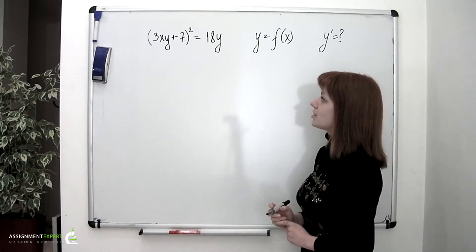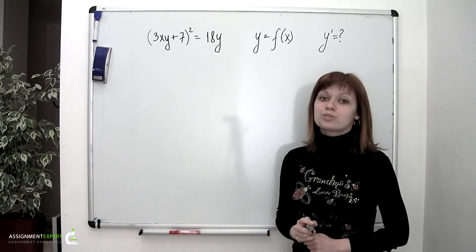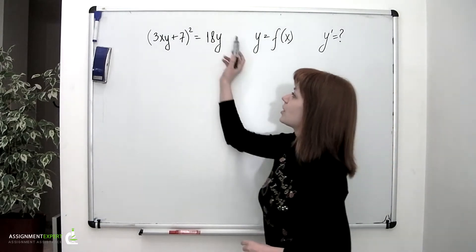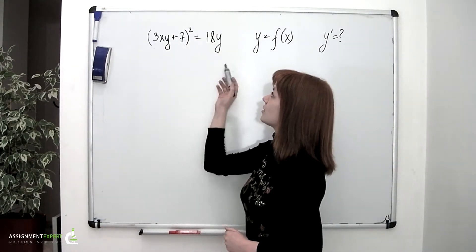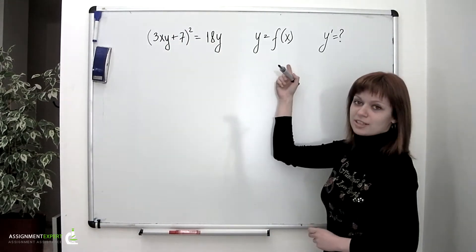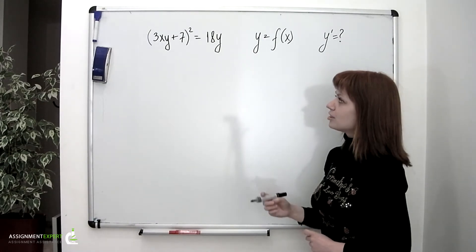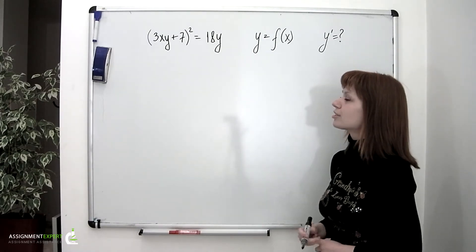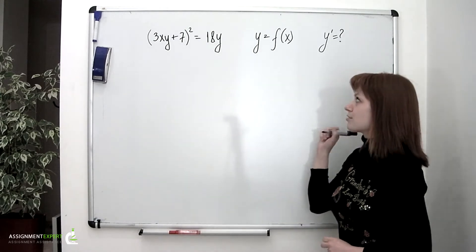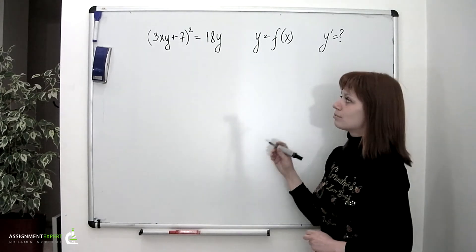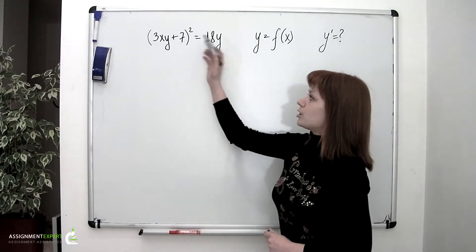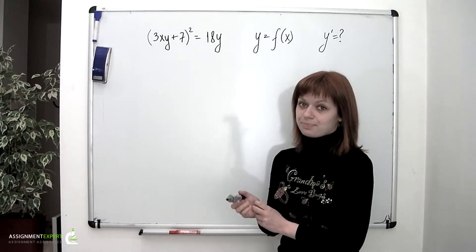In this case, finding the explicit expression for the y function — that is, transforming the given equality into the form y equals f of x — is rather difficult, and moreover it would intricate finding the derivative. So that is why we will work with the equality just as it is.